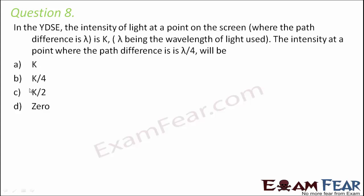Question Number 8. In Young's Double Slit Experiment, the intensity of light at a point on the screen where the path difference is lambda is k. Now we have to find the intensity at a point where the path difference is lambda by 4. We have to create a relationship between the path difference and intensity.